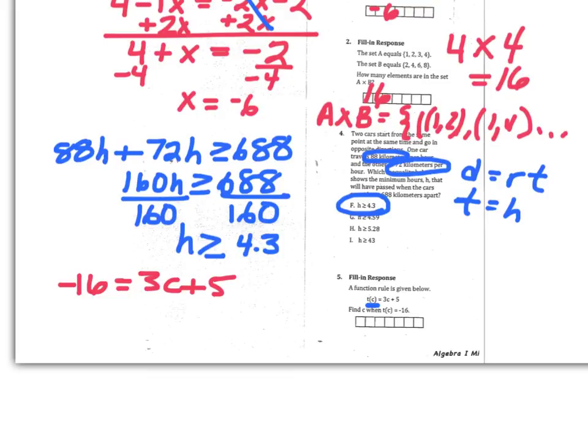Your midterm question might be, here I'm going to give you C now, you find T of C. So you have to just be careful of that. So now my next step would be to subtract 5 from both sides. And that gives negative 21 equal to 3C. And then divide both sides by 3 and I get negative 7 equal to C.